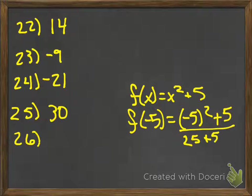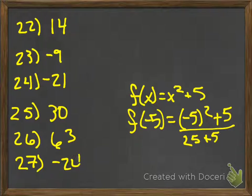Okay, then 26 would be 63. All I have to do is 9 times 7. And 27, 5 times negative 4 minus 4 gives me a negative 24. Again, all those should be pretty easy. If you don't understand those, just make sure to let me know.